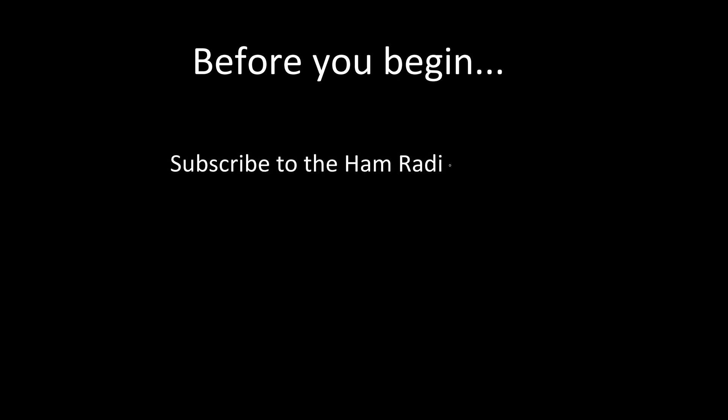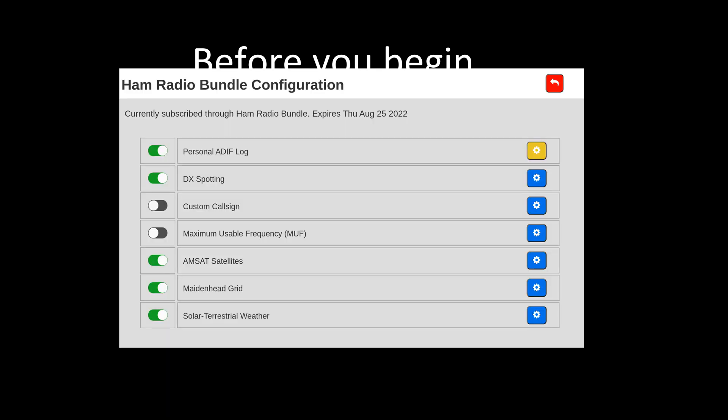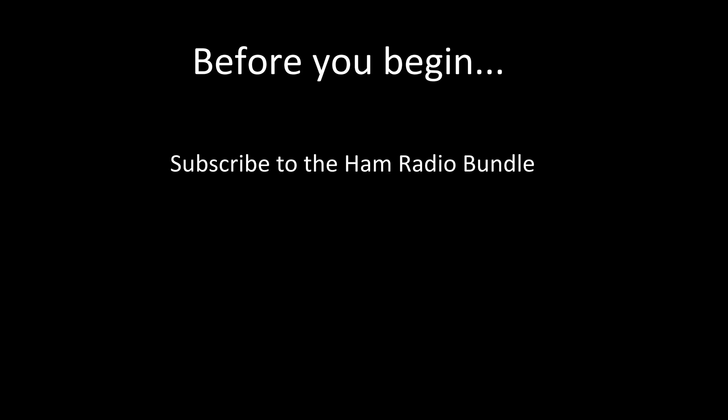Prior to this process, which should only take three steps, you'll need to have this ready to go. First, make sure you're subscribed to the Ham Radio Bundle. The Geochron needs to be showing the Ham Radio Bundle like this, and if it doesn't, you have not yet subscribed.